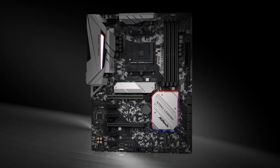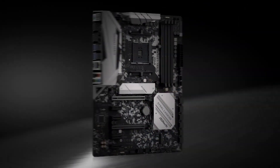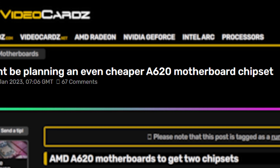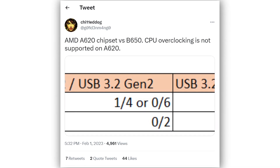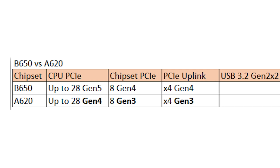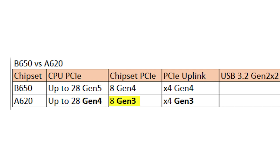Lastly, if you've been following PC hardware news, the new AMD A620 chipset has got some interesting specs. Hardware leaker ChileDoc just leaked the specs of the upcoming A620 chipset, showing it is devoid of PCIe Gen 5.0 support. This was expected since the A620 is an entry-level chipset. However, it will still feature 28 Gen 4 PCIe lanes from the CPU and 8 lanes from the chipset, though those will be Gen 3 instead of Gen 4.